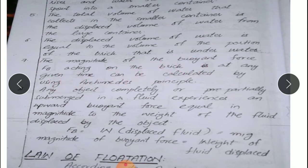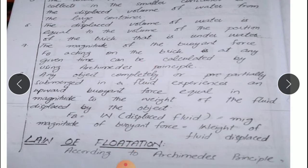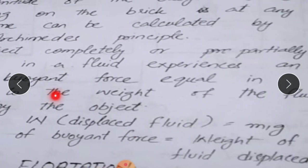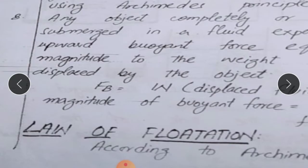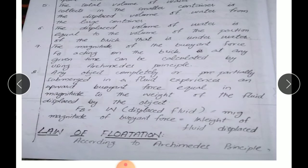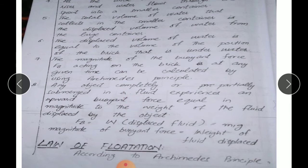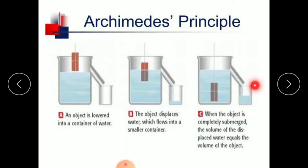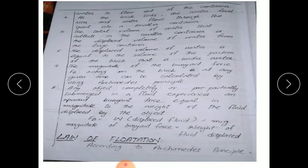The magnitude of the buoyant force is equal to the weight of the water displaced, and it can be calculated using Archimedes' principle. That principle states that any object completely or partially submerged in a fluid experiences an upward force — called the buoyant force — whose magnitude is equal to the weight of the fluid displaced. You can see in this mathematical relation: F_B is equal to W.